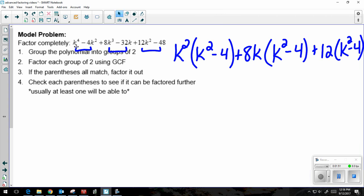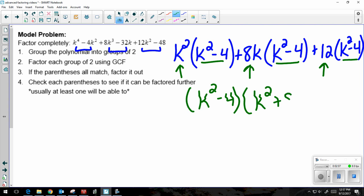So because my parentheses all match, they are considered a GCF. So I have k squared minus 4, and then what's left over, this k squared plus 8k and plus 12, goes in the second parentheses.